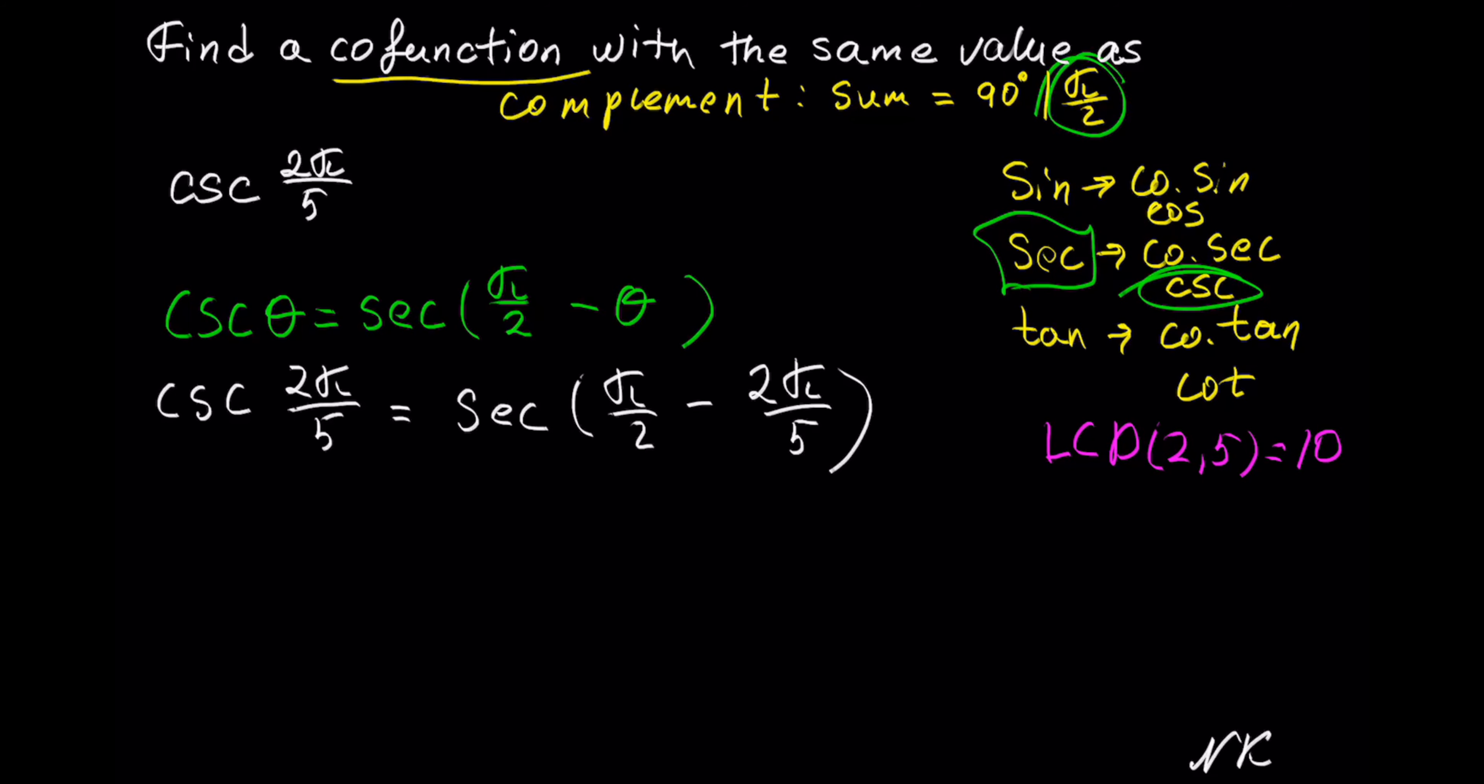In the first fraction, we have a 2 in the denominator. It needs a factor of 5 to become a 10. Whatever we multiply the denominator by, we multiply the numerator by the same thing. So π times 5. In the second fraction, we have a 5. It needs a factor of 2 to become a 10. Whatever we multiply the denominator by, we multiply the numerator by the same thing. So 2π times 2.